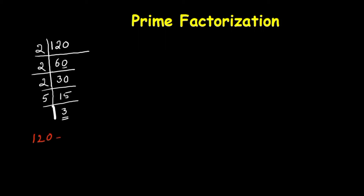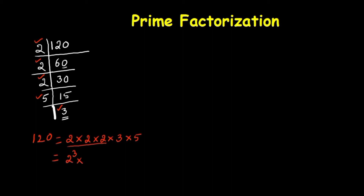Now how do we write 120 into prime factors? Check how many 2s there are: 1, 2, 3. So we write 2 times 2 times 2, and after that we have a 3 and a 5. In exponential form, we have 3 twos, so we write 2 cubed times 3 times 5.